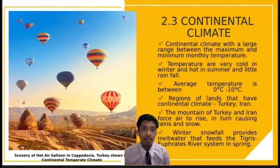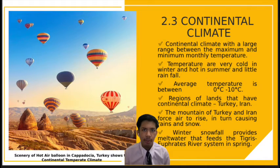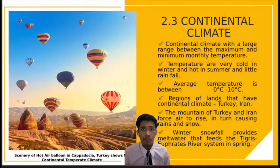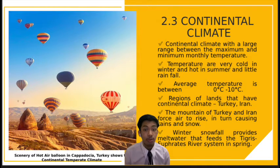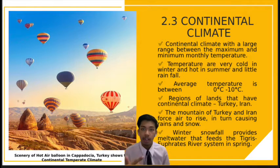The last climate is the continental climate. For this climate, the temperature is very cold in the winter, hot in the summer, and there is little rain in the fall. The average temperature is between 0°C and 10°C. An example region with continental climate is Turkey and Iran. As a fun fact, winter snowfall provides melt water that feeds the Tigris-Euphrates river system.